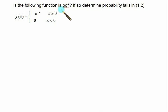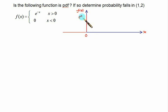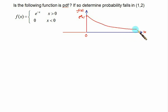In this problem we have to test whether the function is a probability density function (PDF). For x less than 0 the value is 0, and e to the power 0 equals 1, so the function rises to 1 at x=0. Then as x increases, the value decreases — this is exactly the density function, continuing up to plus infinity.